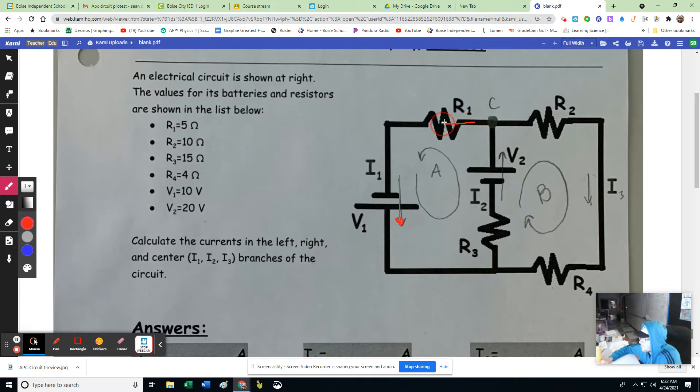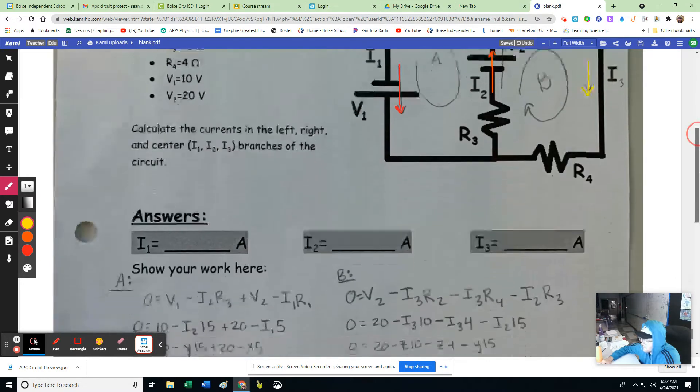And so it's also going to be this way right here. I'm claiming my current 2 direction to be this way. And I'm claiming my current 3 direction to be this direction. Okay? So that's Kirchhoff's current law for node C here.